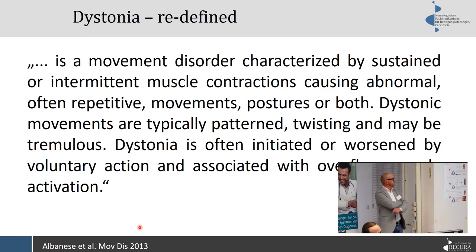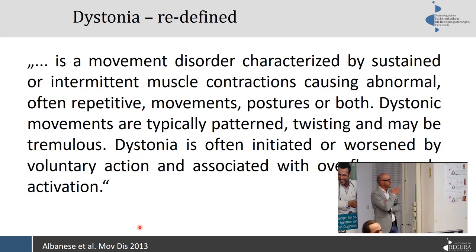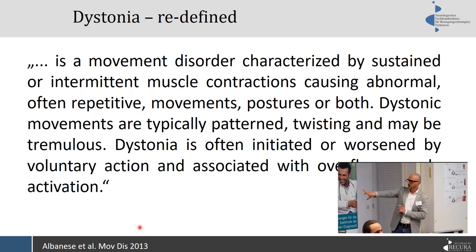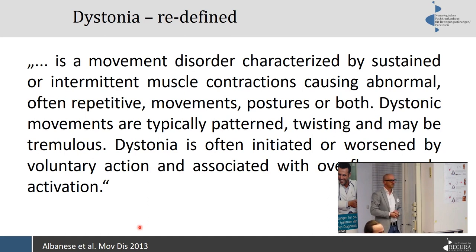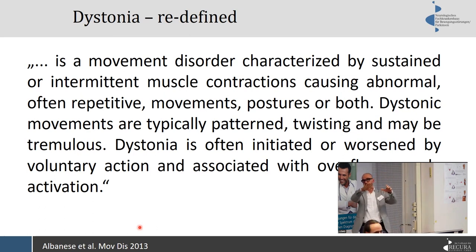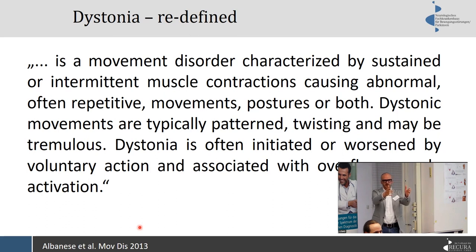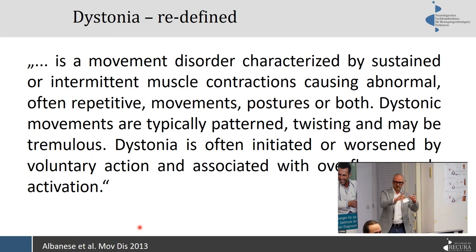We redefined the definition of dystonia in 2013. It now states that it is either sustained or intermittent co-contraction of muscles. It can be repetitive, and there's movement, postures, or both. It usually worsens on voluntary action, or it can be triggered by voluntary action. And it can be tremulous — you can have a patient with a dystonic tremor. Eventually you will find a position where this tremor subsides, whereas a Parkinsonian tremor doesn't subside regardless of how you hold the hand. The dystonic tremor has a null position — that's a classic feature.